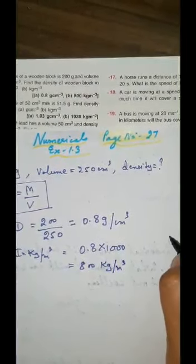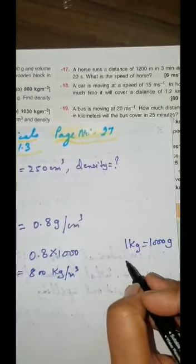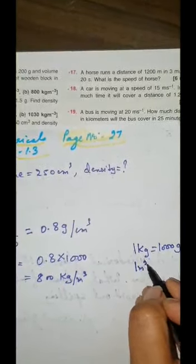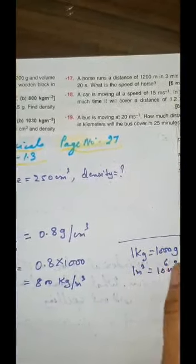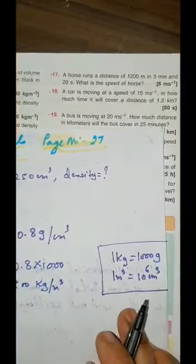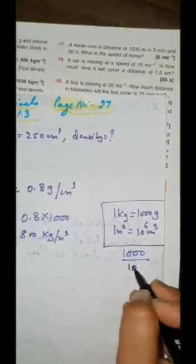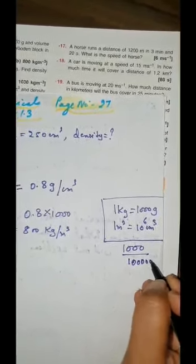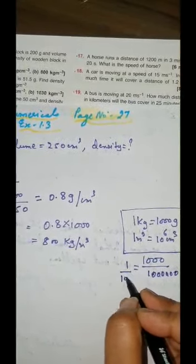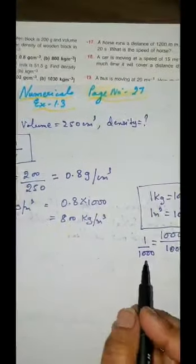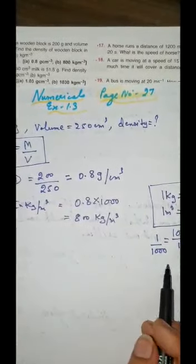I am showing how this has come. We know that 1 kg is equal to 1000 gram and 1 meter cube is equal to 10 to the power 6 centimeter cube. These relations we have done. When you divide: 1000 divided by 10 to the power 6 — that gives 1 by 1000 — so you have to multiply by 1000. If you have to change kg per meter cube to gram per centimeter cube, you will multiply.